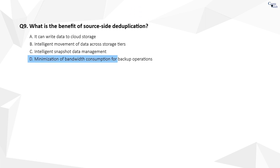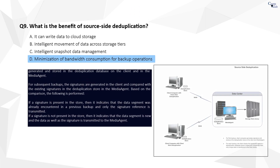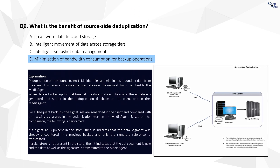The correct answer is D. Source-side deduplication identifies and eliminates redundant data from the client, thereby reducing the data transfer over the network, which minimises the network bandwidth consumption for backup operations.